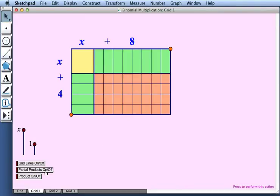We can show these partial products by pressing this button. We can also show the entire product by adding those together so we have the 4x and the 8x combined to make 12x.